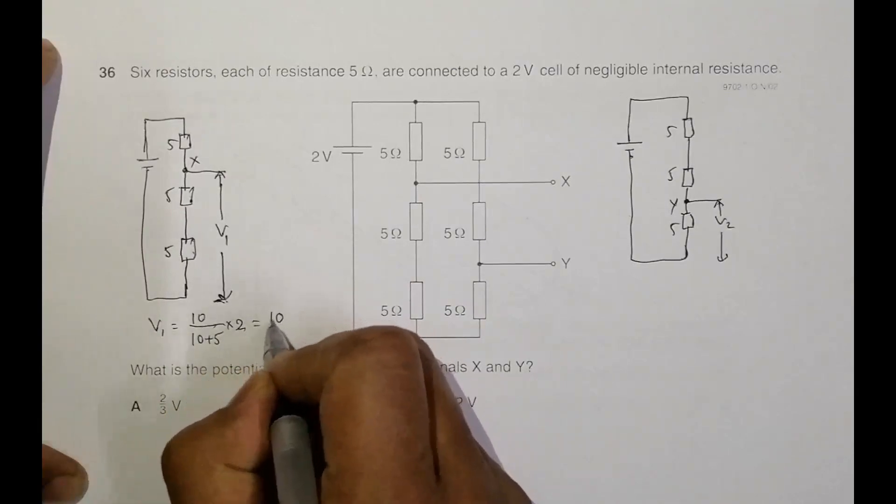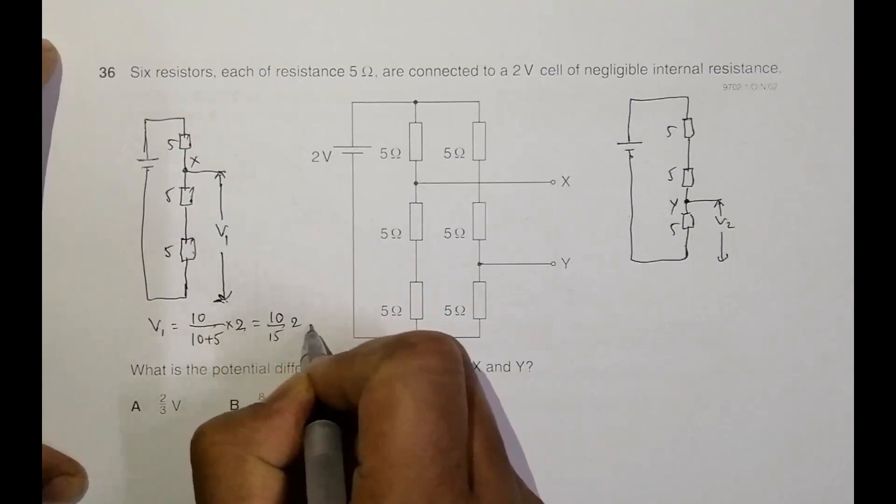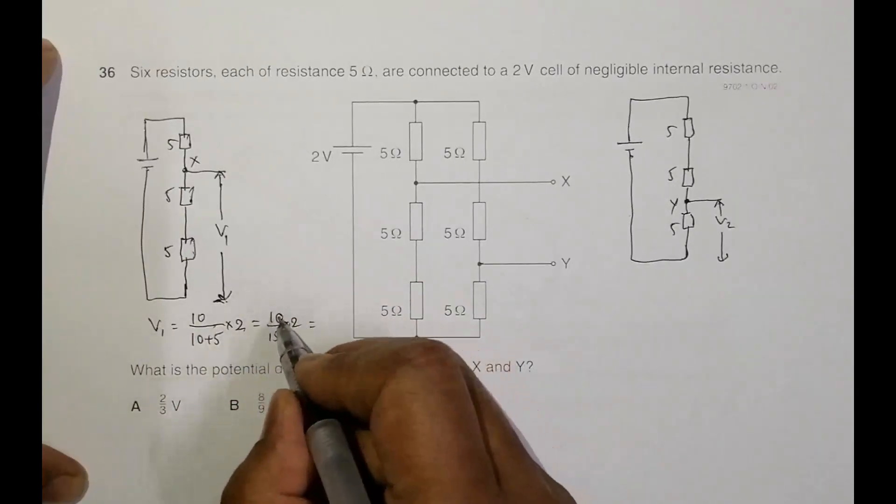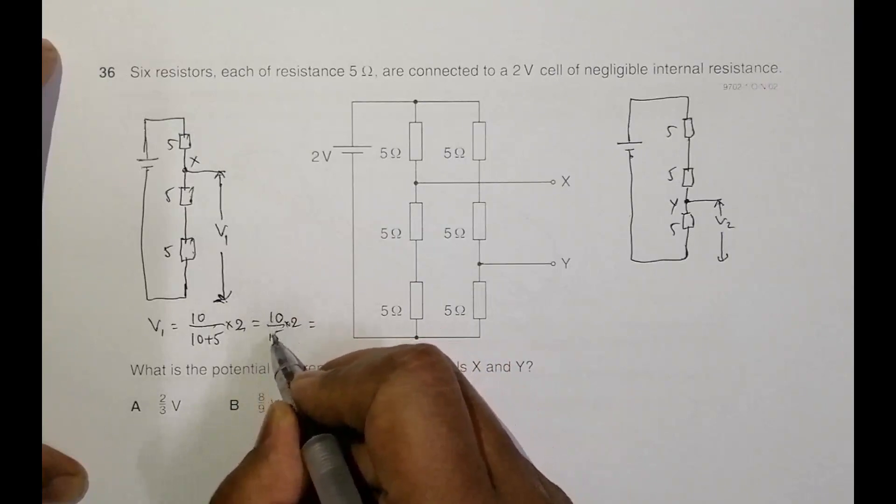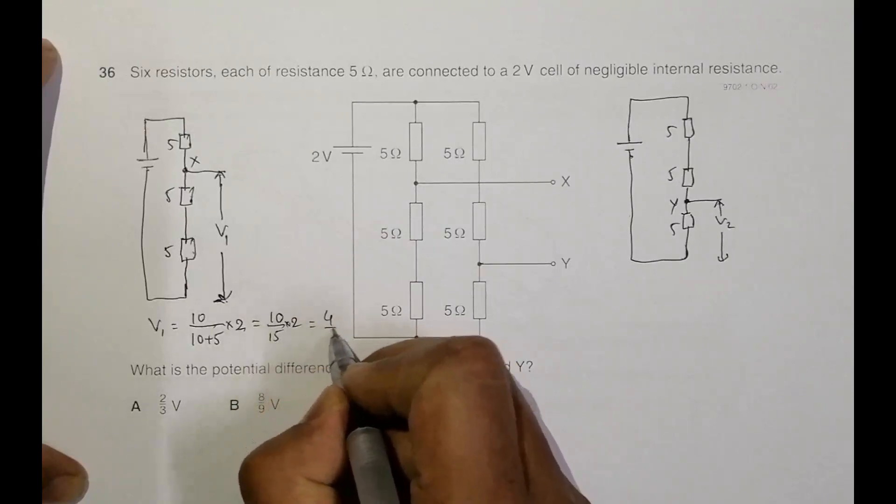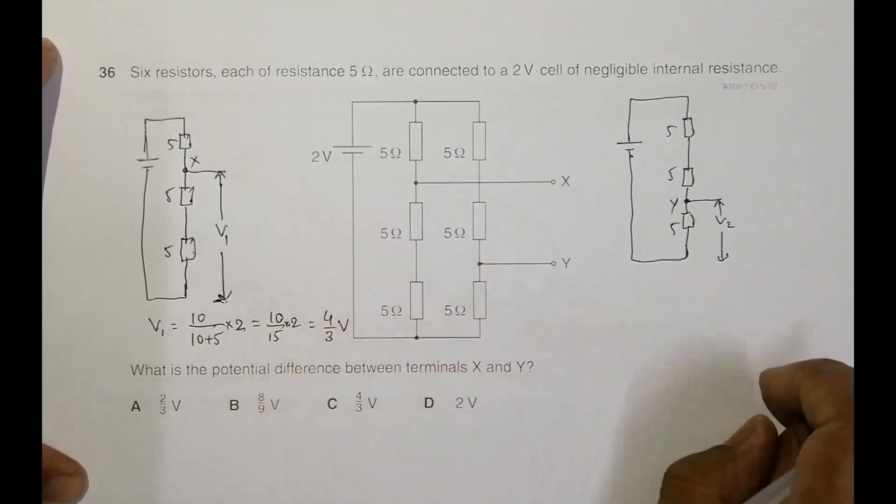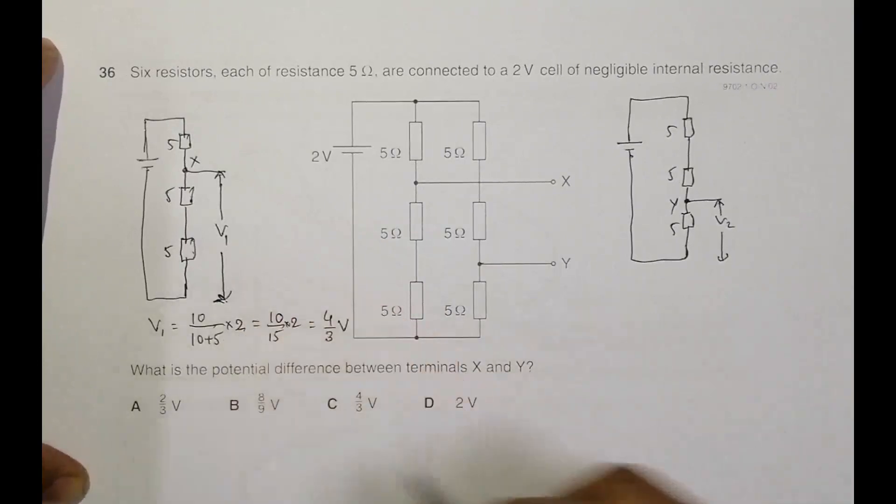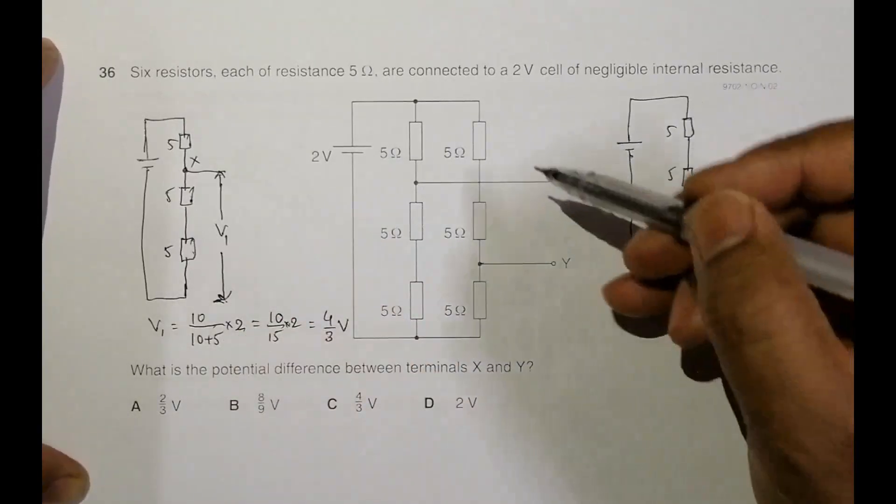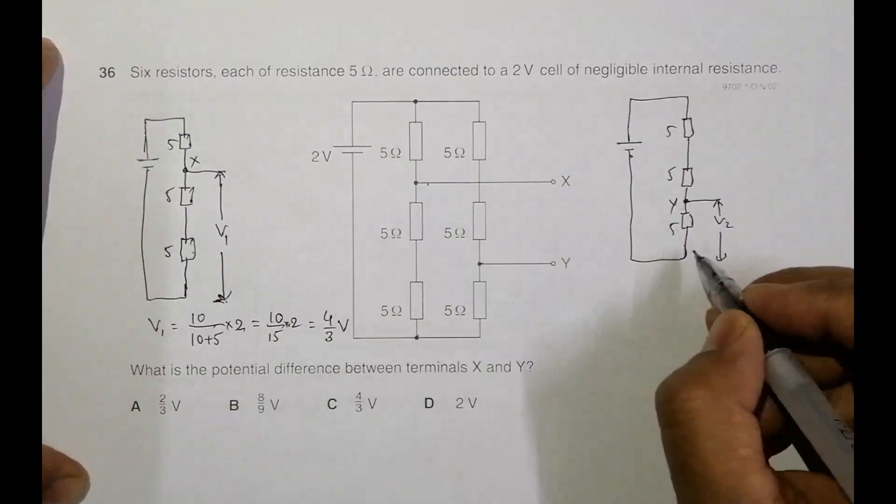So it's equal to 10 by 15 into 2. So it's equal to, 2 to 5 to the 10, 5 to the 15. So it is equal to 4 by 3 volt. So this V1 is equal to 4 by 3 volt or the PD between this point and this point is equal to 4 by 3 volt.